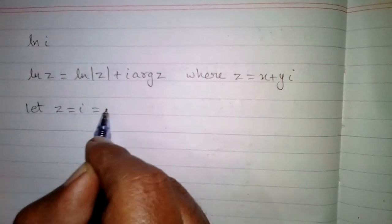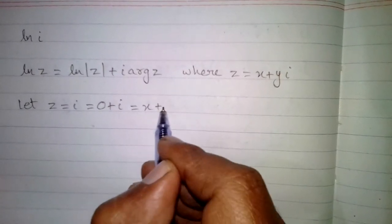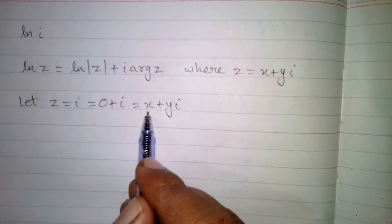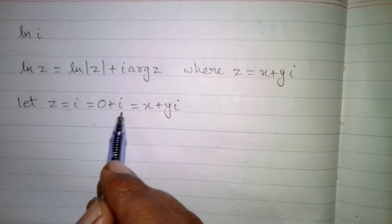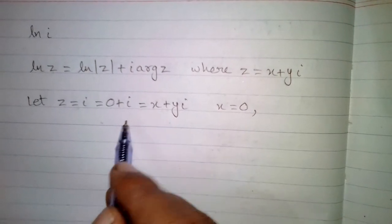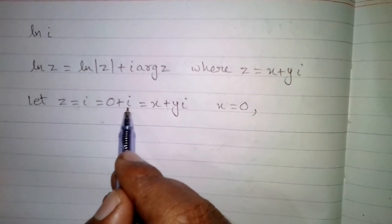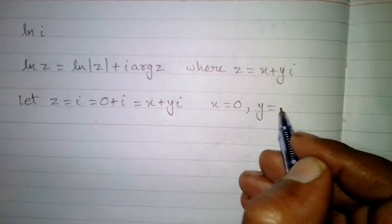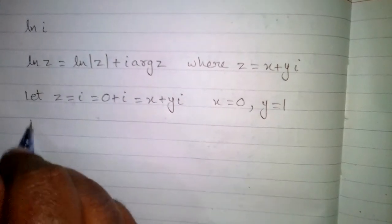Here we have iota in place of z, so we can suppose that z is equal to iota, or we can say that iota is equal to 0 plus iota. So the real part of this complex number is x, and we can see that x is equal to 0. The imaginary part is y, which is the coefficient of iota.